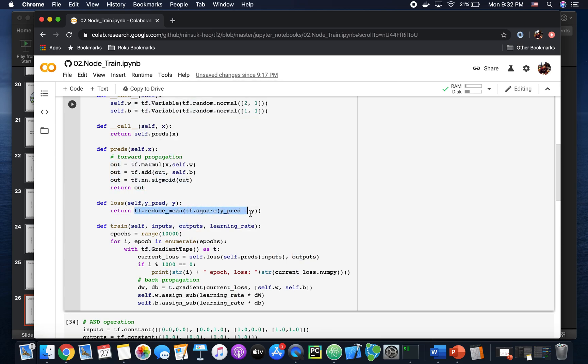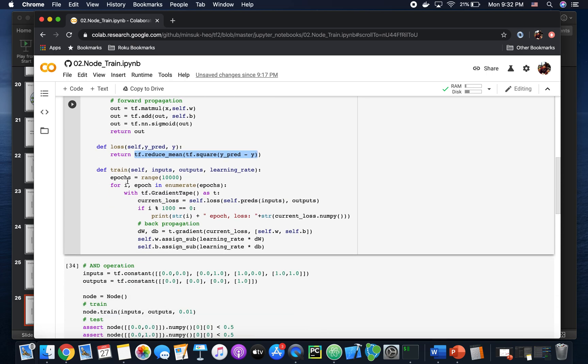Loss function is a mean square, as you can see in here. And the training, I have the 10k epochs here.